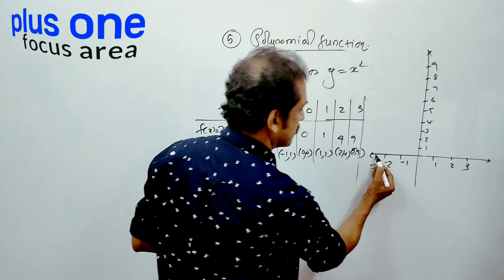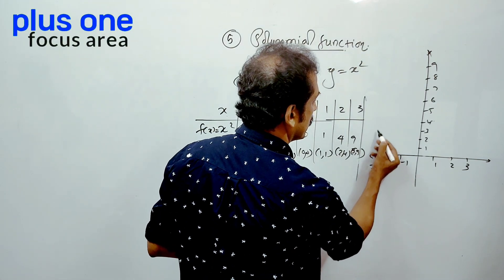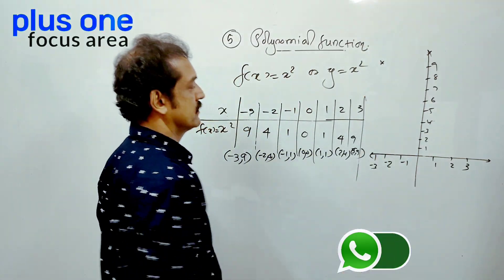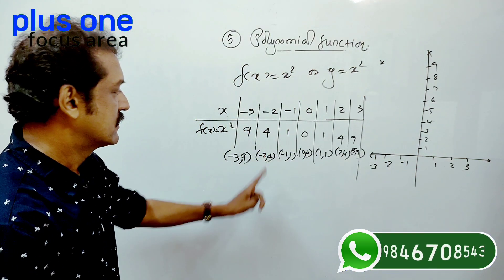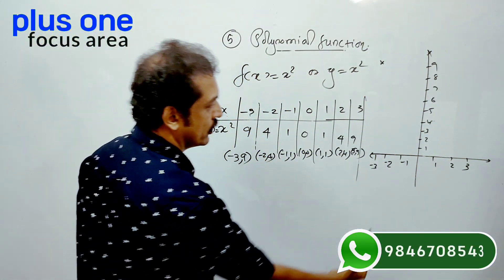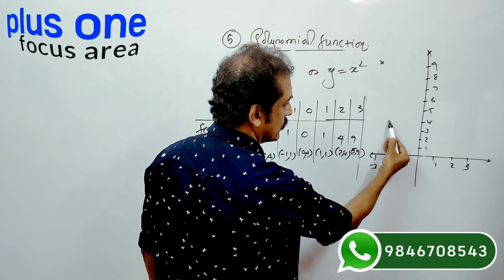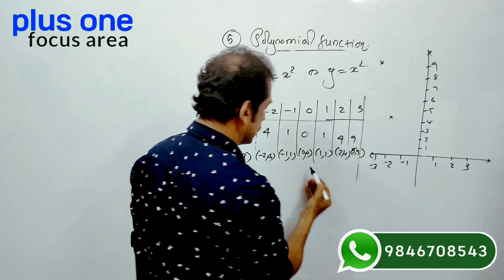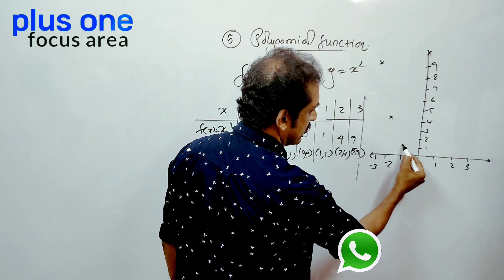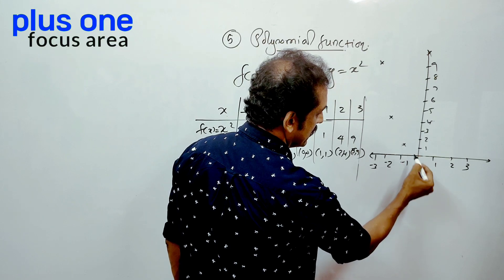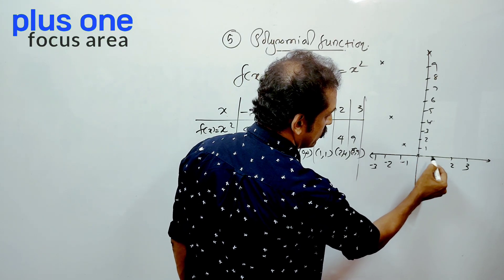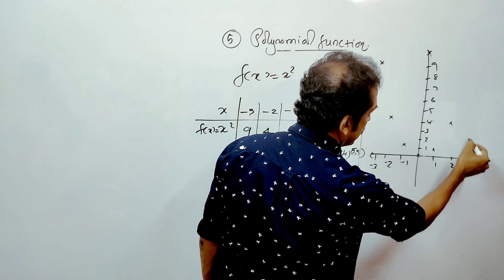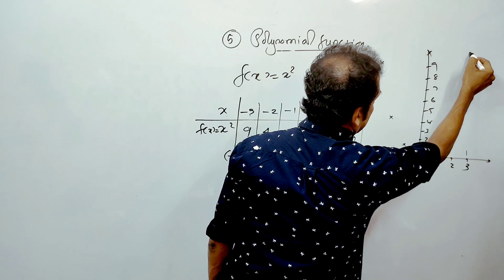Points: minus 3, 9 is the first point. Next minus 2, 4. Minus 1, 1. Next is 0, 0. Next is 1, 1. Next is 2, 4. Next is 3, 9.